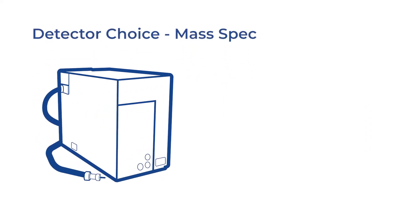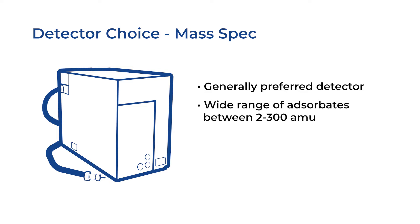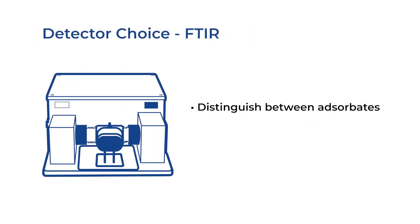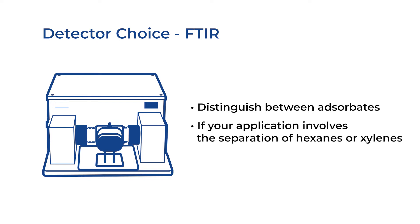Mass spectrometers are generally the preferred detectors. They offer a wide range of detectable adsorbents between two and three hundred atomic mass units and have excellent detection limits down to single digit parts per million. Additionally, it is a fast and accurate technique. Alternatively, FTIR can be used to distinguish components with the same atomic mass number, which cannot be achieved using a mass spectrometer.